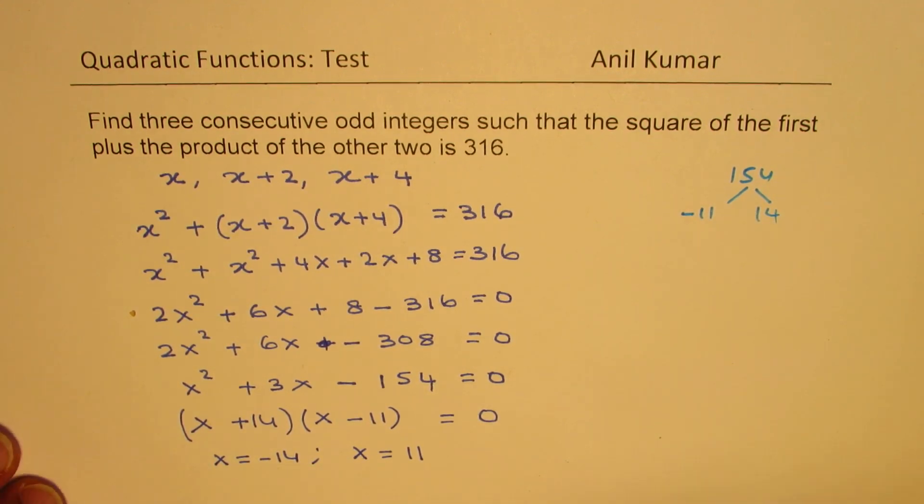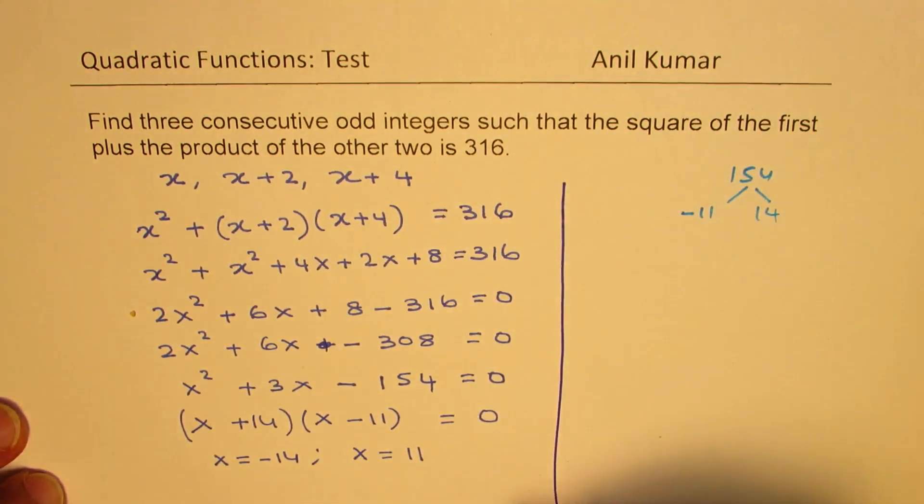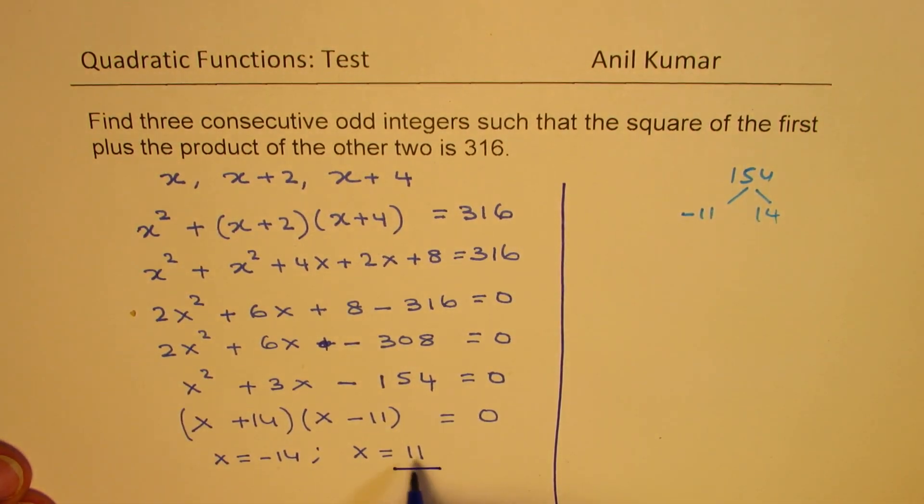The question is find three odd integers. So that means odd integers—we have to consider 11. So x is 11 for us, and therefore the other two integers are...